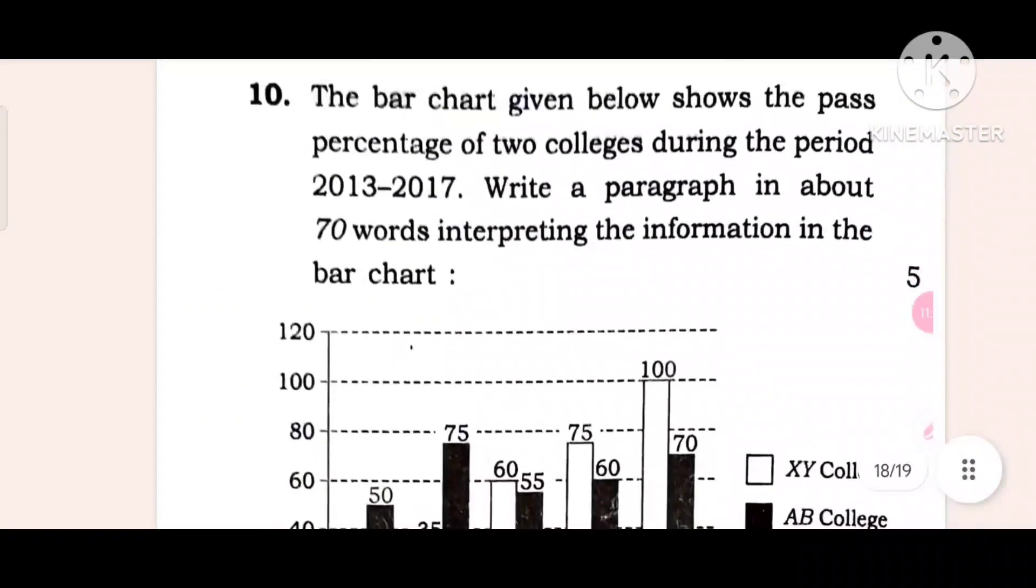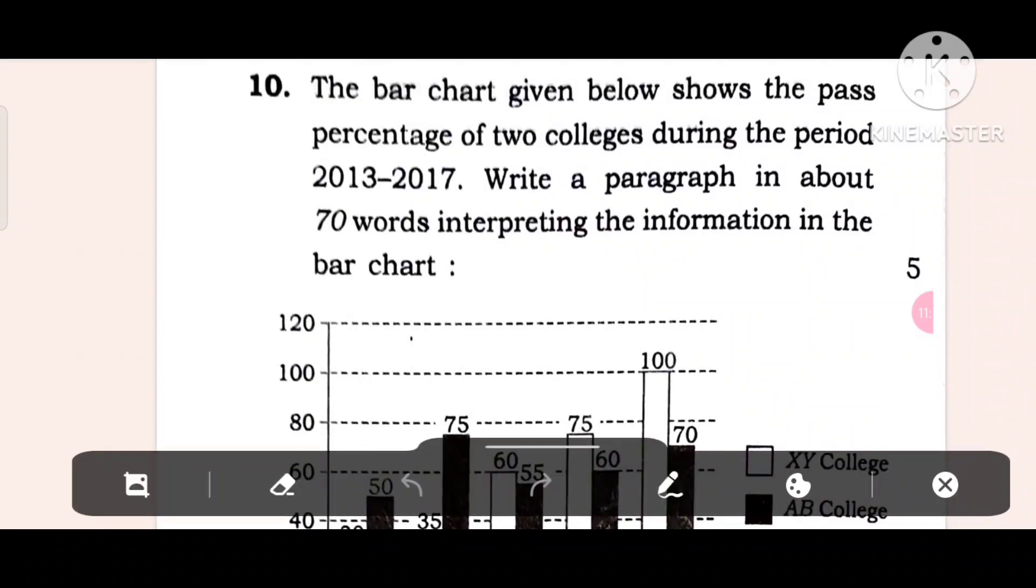The last question: The word chart given below shows the first percentage to college during the year 2013-2017. Write a paragraph in about seventy words interpreting the information in the chart. This is interpretation of data, five marks.